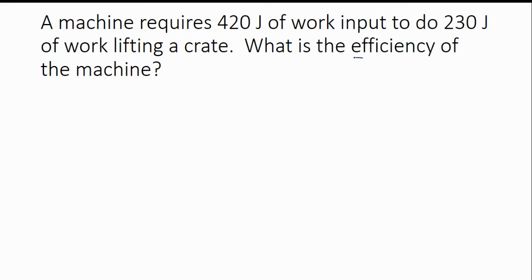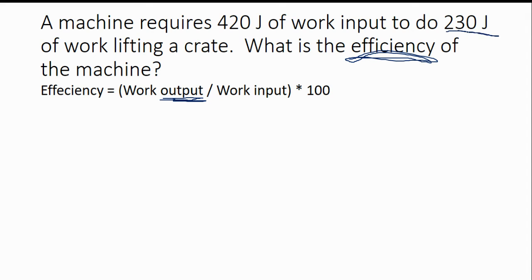So in this problem, we are asked to solve for efficiency. So we need to solve for efficiency. This is just the next problem that's on that word document study guide that's on Canvas. And so this is saying a machine requires 420 joules of work input to do 230 joules of work lifting a crate. What is the efficiency of the machine? Now, our equation for efficiency is work output divided by work input times 100. Now, remember, work output is going to be what the machine is doing. So what is it actually accomplishing? Well, it's lifting a crate. It's the work of lifting a crate. And that was 230 joules.